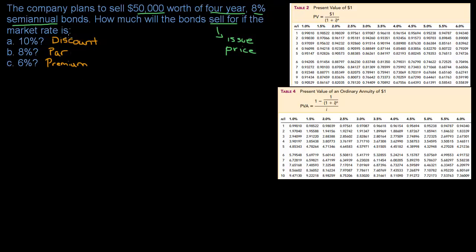So we know that a discount means selling for less than par, equal means selling at par, and a premium means selling for more than par. Now we know what to expect when we're doing the calculations. Let's start running through the calculation for scenario A. Remember we said in the last video that there are two different parts to this bond: the bond itself, the $50,000...